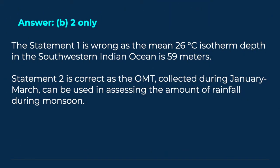The answer is B, 2 only. Statement 1 is wrong, as the mean 26 degree centigrade isotherm depth in the southwestern Indian Ocean is 59 meters. Statement 2 is correct, as the OMT collected during January-March can be used in assessing the amount of rainfall during monsoon.